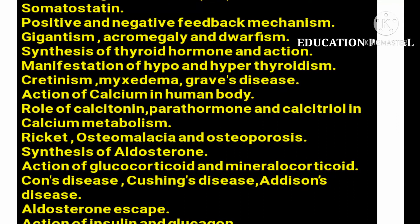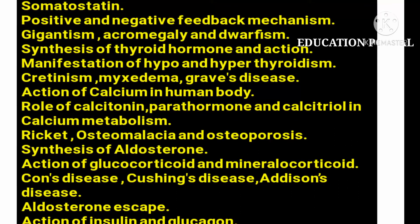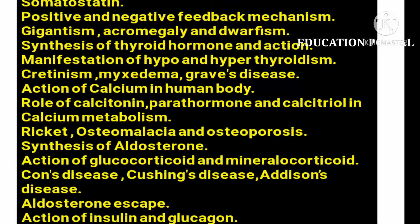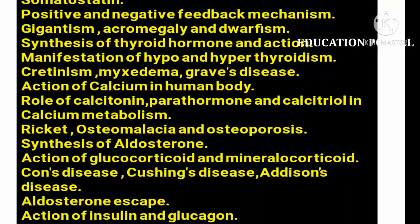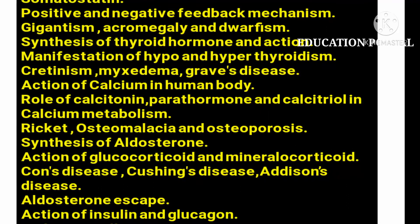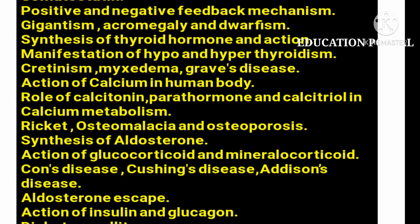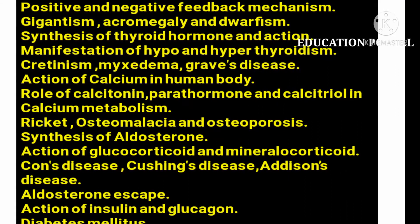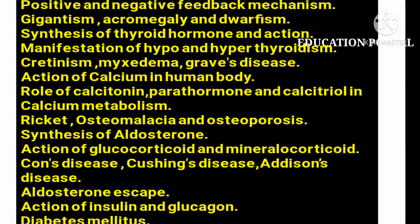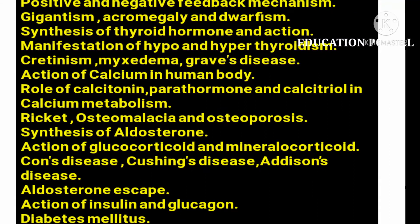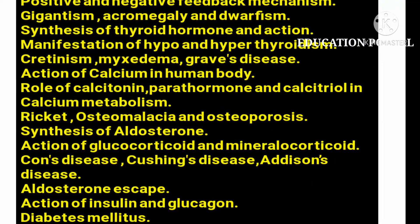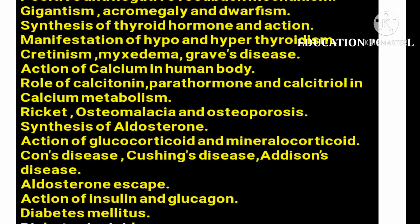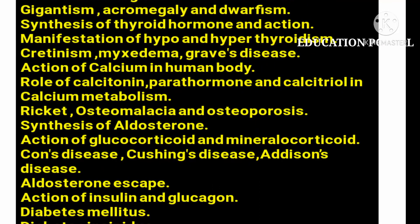The next important topics are gigantism, acromegaly, and dwarfism — all related to growth hormone. Remember: gigantism is excessive growth hormone production before adolescence; after adolescence it is acromegaly; and dwarfism results from a lack of growth hormone production.